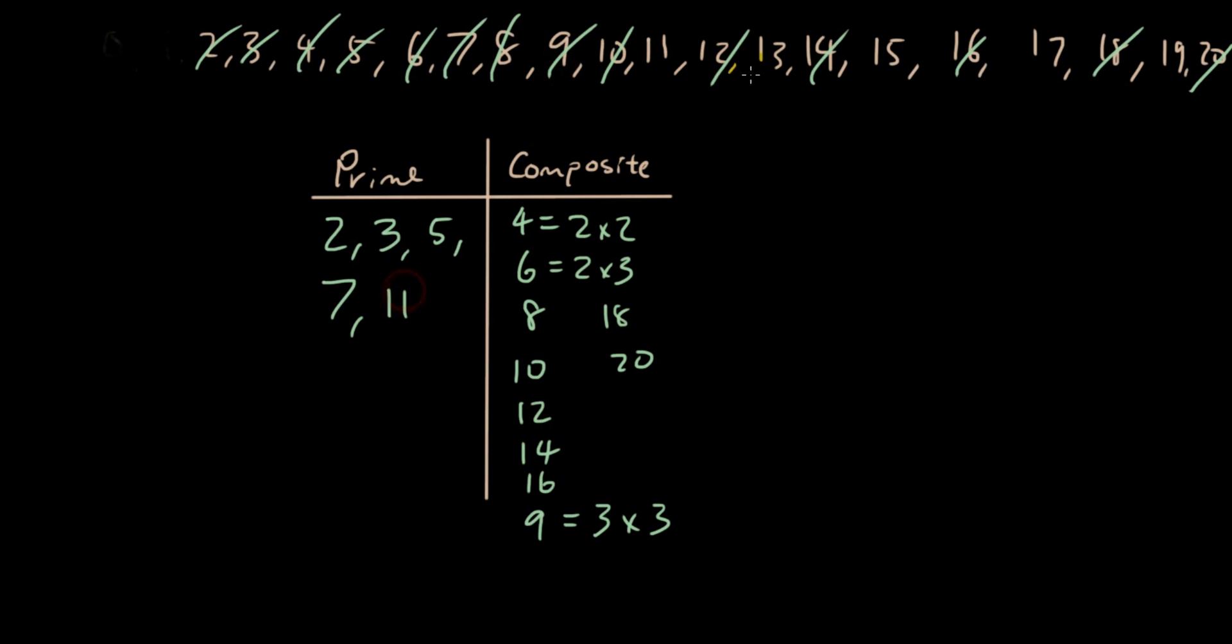11 prime, 13 prime, 15 is a composite because 15 is 3 times 5. 17 is prime, and 19 is prime.